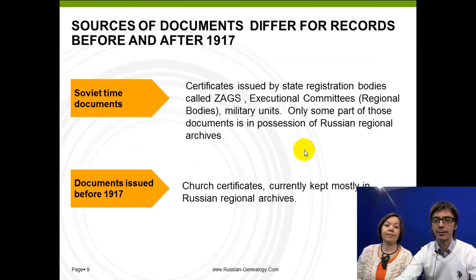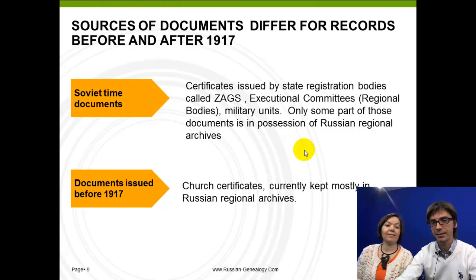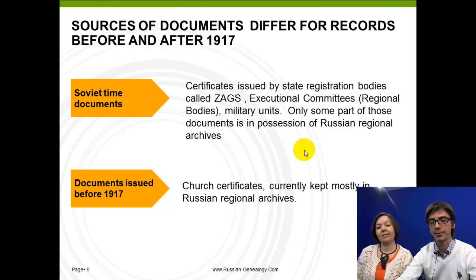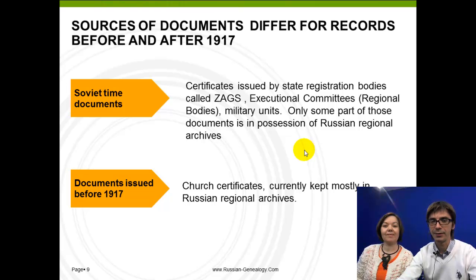What are the sources of documents for your relatives? Russia has a long and interesting history, and that very much influences how you should search for your relatives. If you are looking for relatives who lived in Soviet times, you should first apply to state registration bodies, called ZACs in Russian. You should also check executive committees — these are regional bodies — as well as military units and sometimes other establishments specific to the career of your relative or his region. Only some of these documents are in Russian regional archives, so most likely you'll need to apply directly to these bodies.